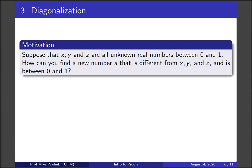Now let's move on to diagonalization. So this is going to be the main proof technique for this section. And rather than get into the proof first, let's look at diagonalization as a strategy. So suppose that x, y, and z are three unknown real numbers between 0 and 1. How can you find a new number a that is different from x, y, and z and is between 0 and 1? So think about a method that you could do for this.